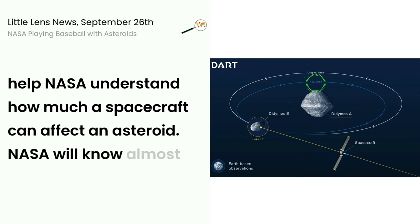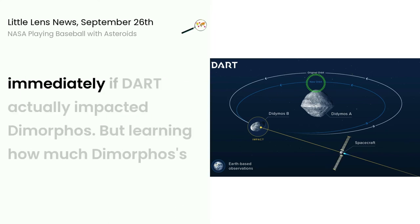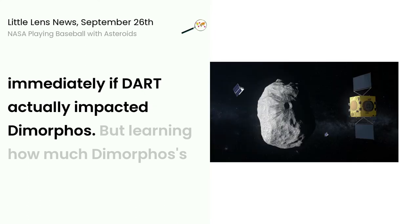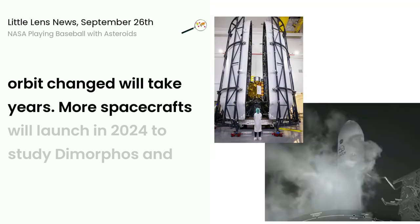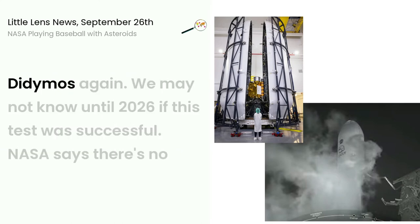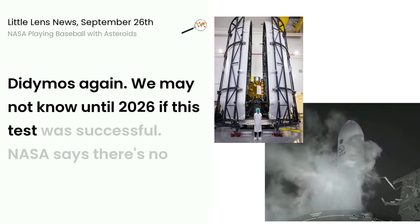NASA will know almost immediately if DART actually impacted Dimorphos. But learning how much Dimorphos's orbit changed will take many years. More spacecrafts will launch in 2024 to study Dimorphos and Didymos again. We may not know until 2026 if this test was successful.